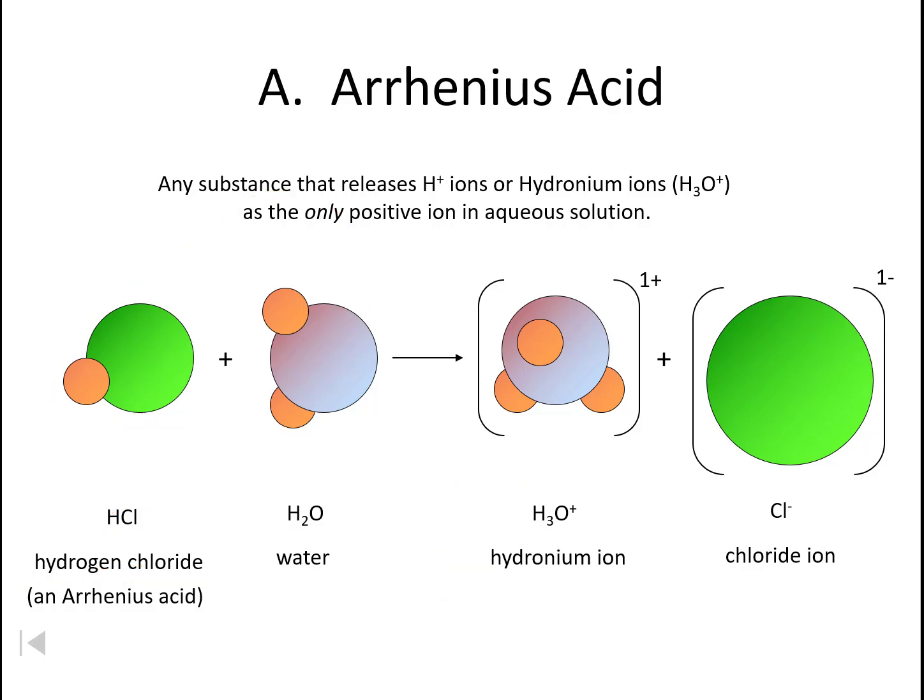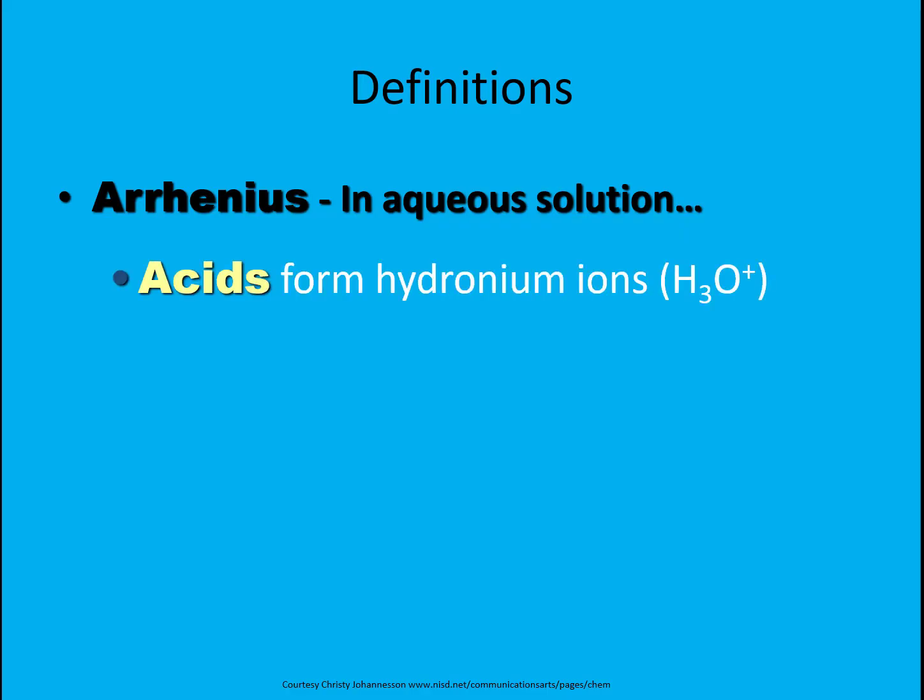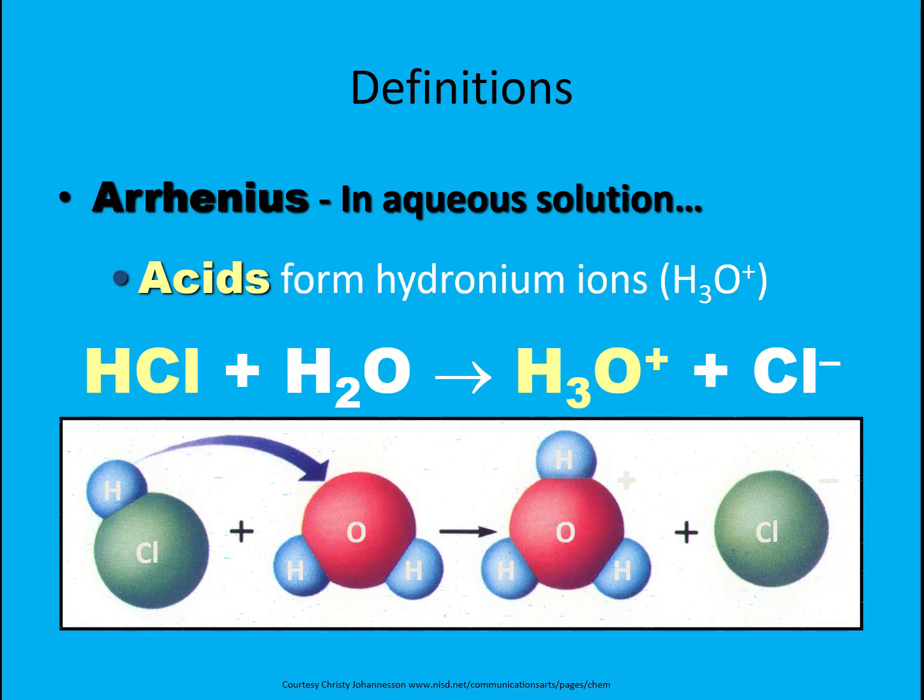The other component is our chloride ion, which is whatever else was on the acid. An Arrhenius acid is defined as any substance that releases hydrogen ions or hydronium ions as the only positive ions in aqueous solution. This is our classic definition of an Arrhenius acid. They form hydrogen or hydronium ions. This shows you that process again for hydrochloric acid—that hydrogen comes over and attaches itself to the water, forming a hydronium ion.